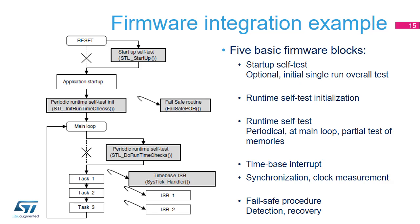The memory areas are tested step-by-step per parts within the task. The test is synchronized by time-based ticks divided from timer interrupts. The interval required to complete the test depends mainly on size of the memory areas under test, frequency of the task calls, and sizes of the blocks tested in a single step. Optionally, a one-time initial startup overall self-test can be additionally implemented at power-on or after application reset. Whenever a malfunction or discrepancy is found during these tests, the fail-safe routine is called. It should put the application into a safe state and determine the next recovery possibilities.